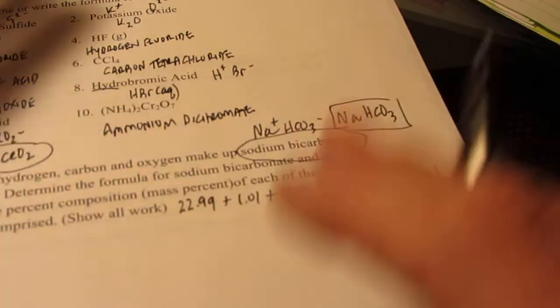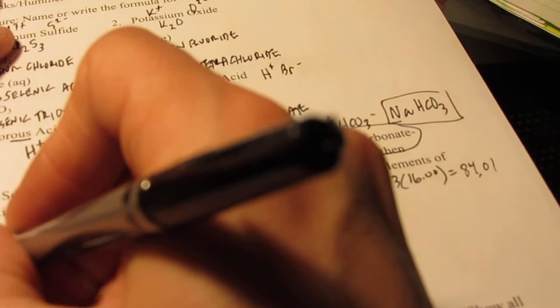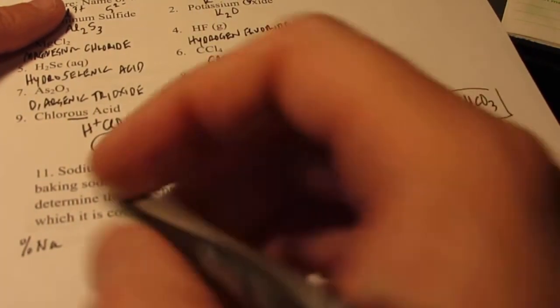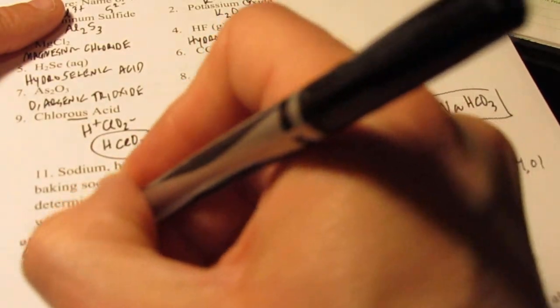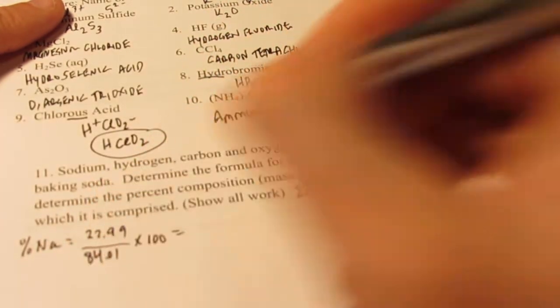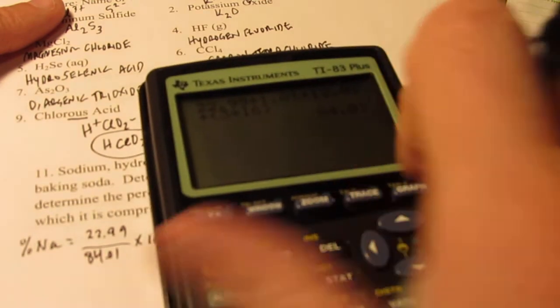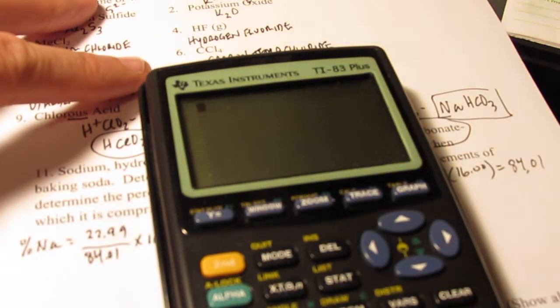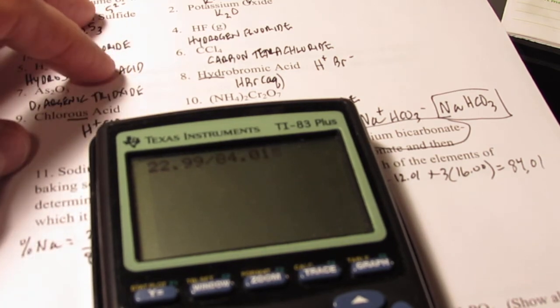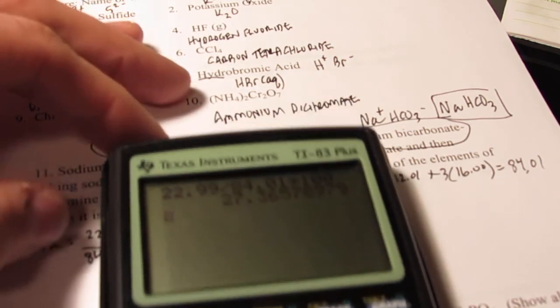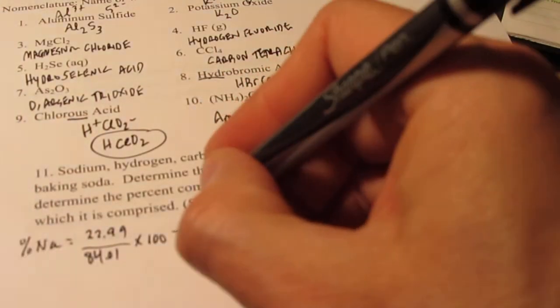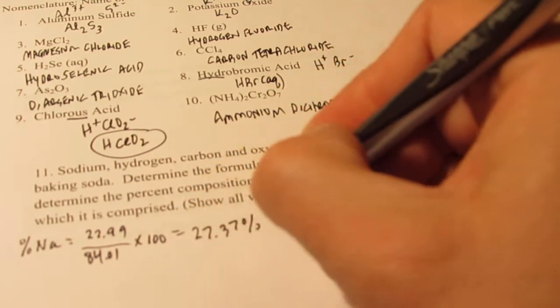Now that's the weight of the compound. I need to find the percent by weight of each element. So let's start with sodium. The percent by weight of sodium would be the weight of the sodium in the compound, 22.99 divided by the total weight, 84.01. And we'll change that to a percentage by multiplying by 100. So we have 22.99 divided by 84.01 times 100. And we get 27.37% sodium.